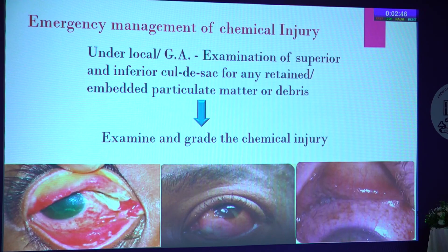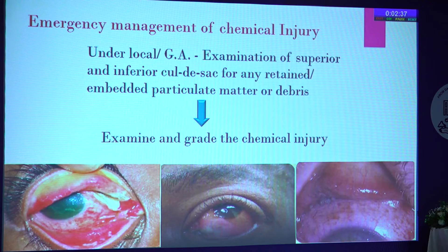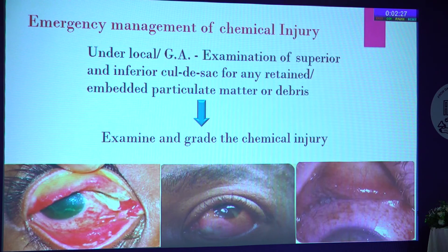Once irrigation is done, re-examine the patient. Particularly in lime injury, lime particles may be embedded deep in the upper fornix and keep eroding the ocular surface. Double eversion should be performed if required, and the fornices must be checked. Then take a proper detailed history, document everything, re-check, and then grade the chemical injury.